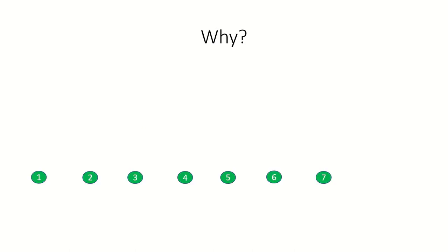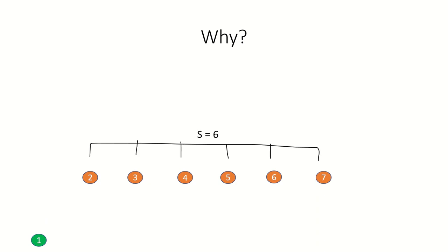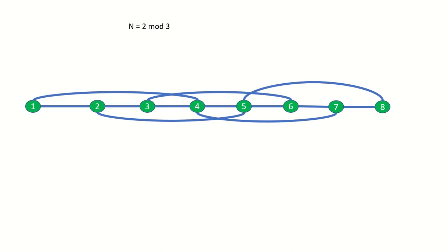So why does n minus 1 over 3 work? We are subtracting 1 from a number n that is 1 mod 3 to get the number s that was added to 1 in order to get n. And s was added to 1 in sets of 3s, so by dividing by 3 we get the number of skip 3 steps needed to get us from our first to last vertex. So what about a skip 3 graph of size 8?